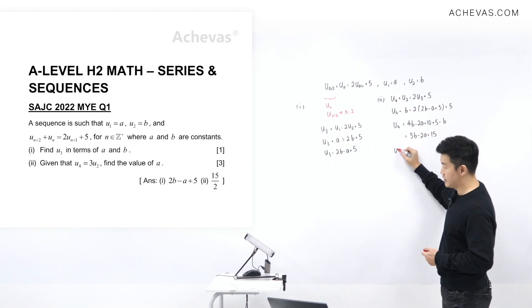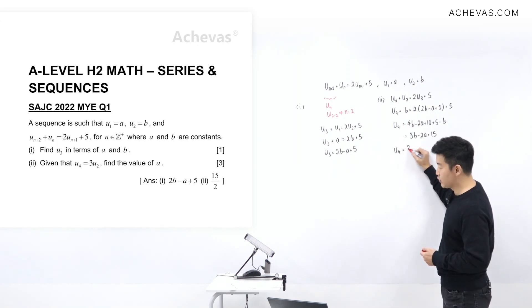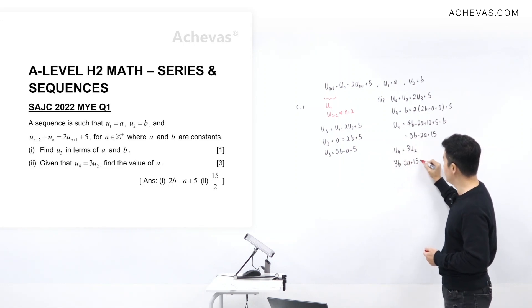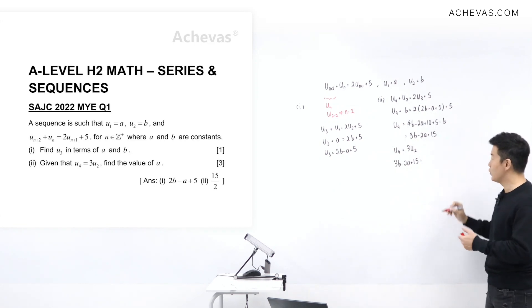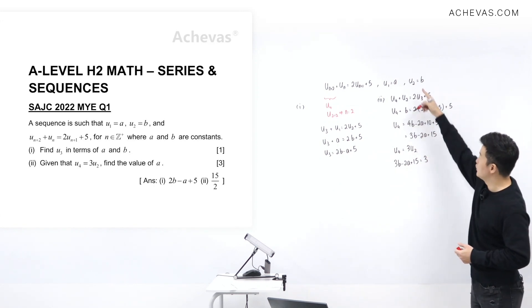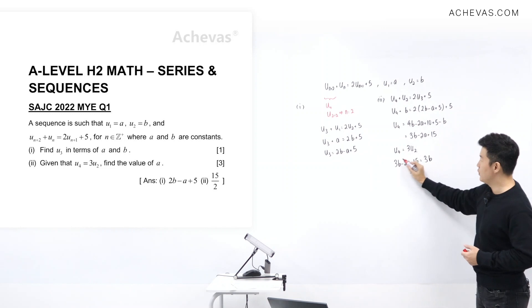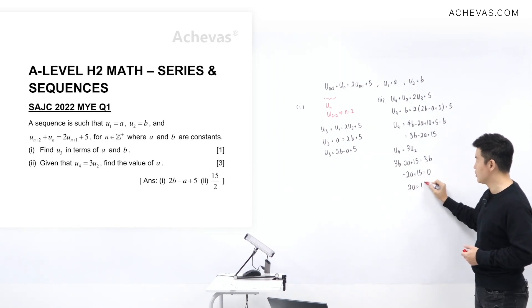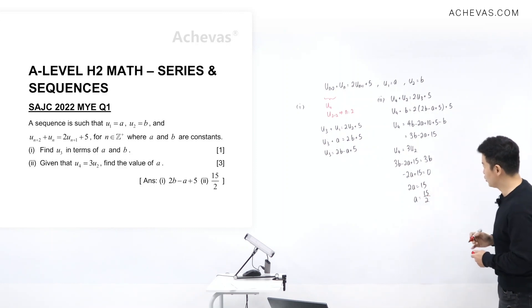The question states that u4 is equal to 3u2. So 3b minus 2a plus 15 equals 3 times b, which is 3b. The 3b terms cancel, leaving minus 2a plus 15 equals 0. Therefore 2a equals 15, and a equals 15 over 2.